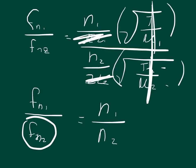and all I got to do is basically just cross multiply this. So I should get that the Fn2 is equal to Fn1 times N2 over N1.